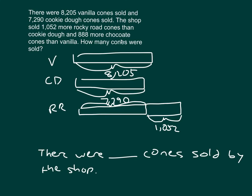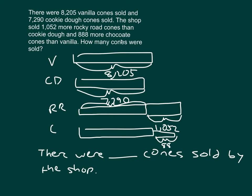Finally, there is one more flavor: chocolate, which was 888 more than vanilla. So we start with the bar the length of vanilla and extend it another 888. The vanilla amount was 8,205.